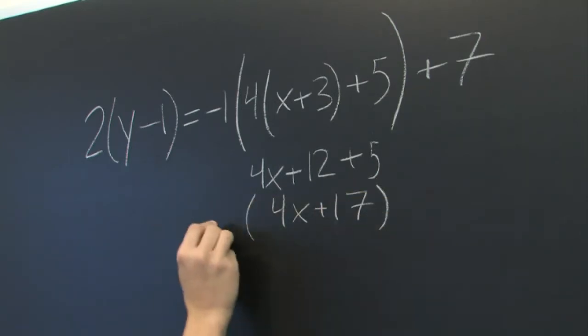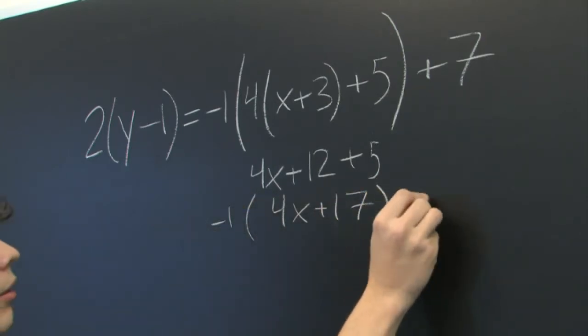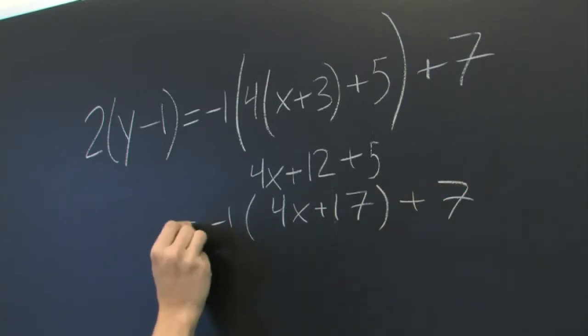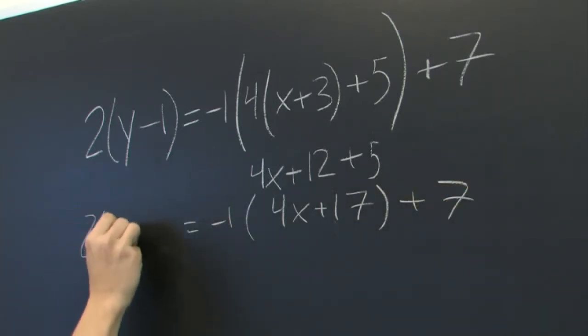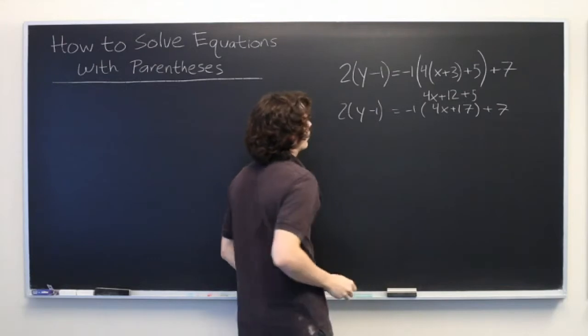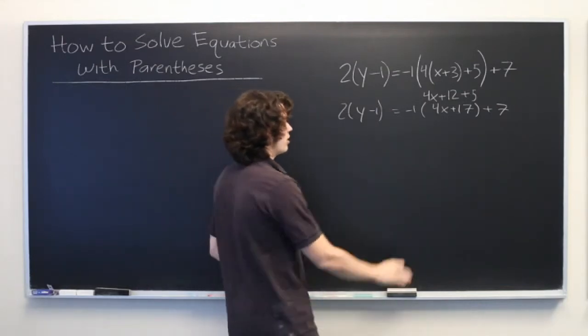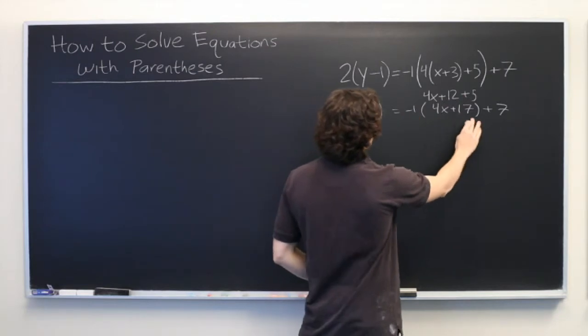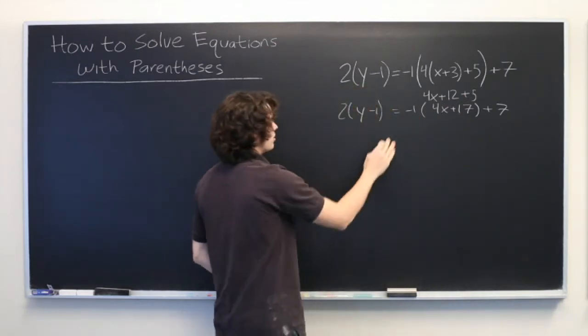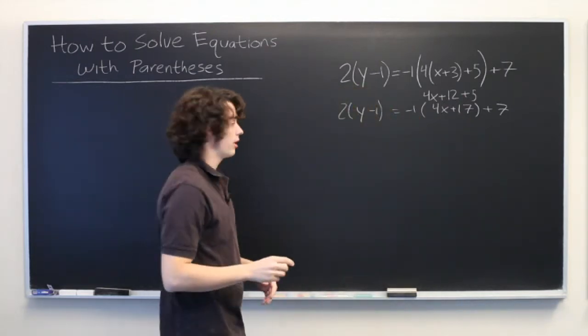Okay. We'll fill in the rest of the equation: 2 times y minus 1. All right. Still not looking a whole lot better. So let's apply this negative 1 to these and the 2 to these. Get rid of all the parentheses altogether.